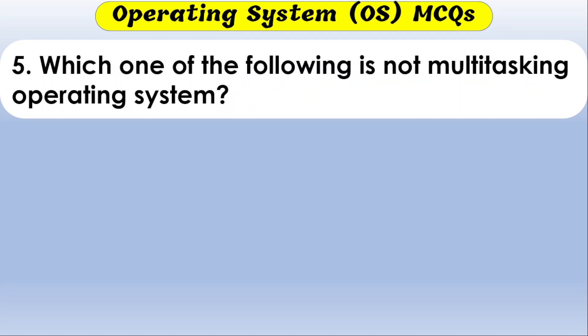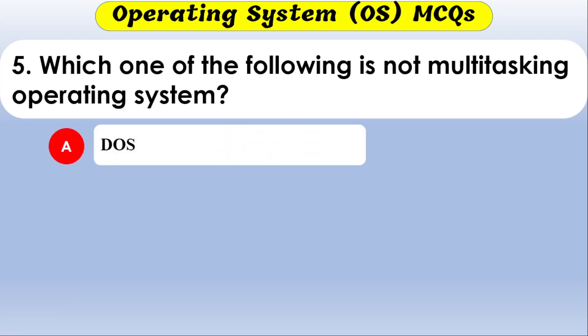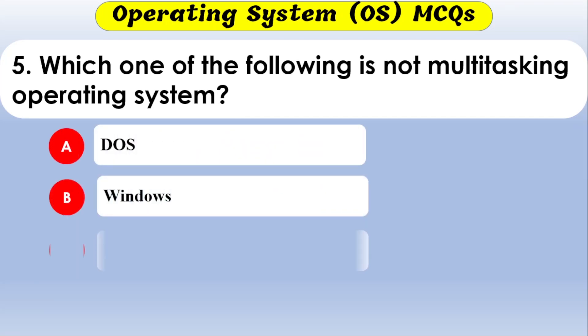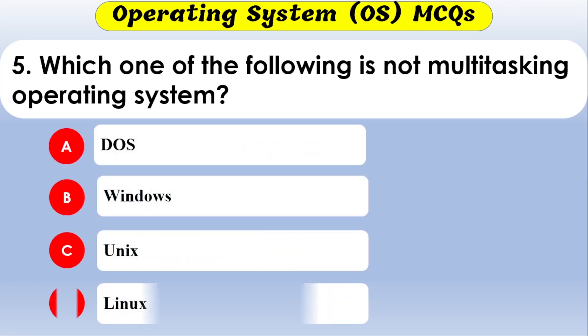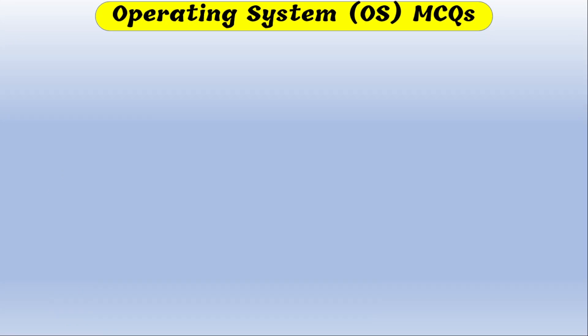Which of the following is not a multitasking operating system? The options are DOS, Windows, Unix, and Linux. The correct option is DOS. DOS is a single-tasking operating system.